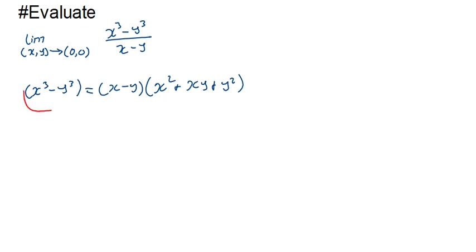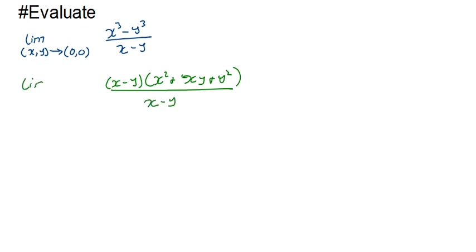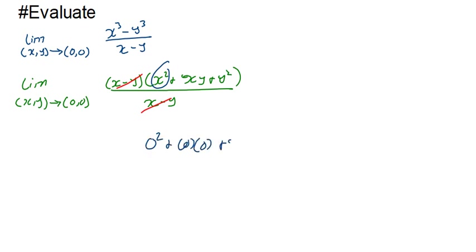After substituting, the limit becomes (x − y)(x² + xy + y²)/(x − y) as (x, y) → (0, 0). The (x − y) factors cancel, leaving x² + xy + y². Substituting (0, 0) gives 0² + 0·0 + 0² = 0. So the limit equals zero.